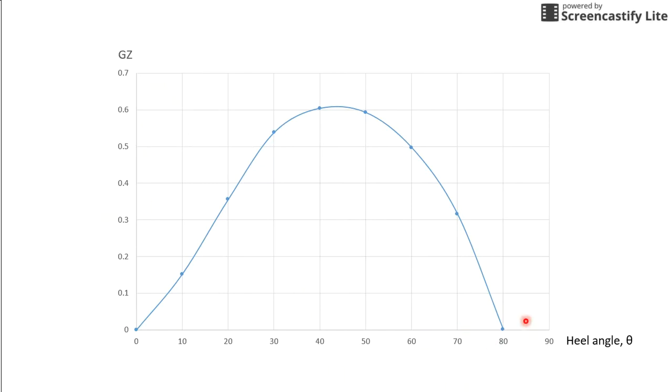So, the first part of the question asks you to answer what is the range of stability of the vessel itself. So, the range of stability is 0 to 80 degrees. And just basically from this point to the other positive point of the curve.